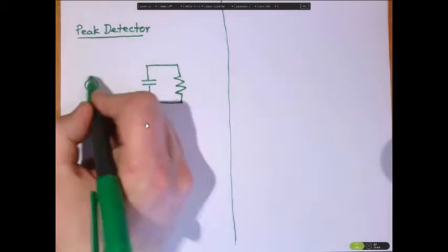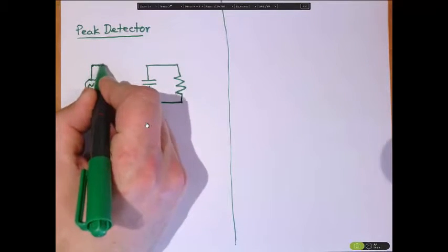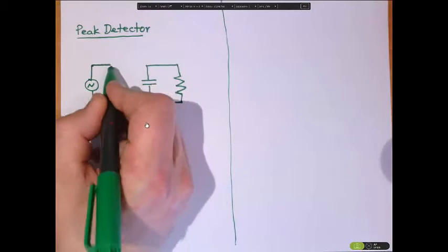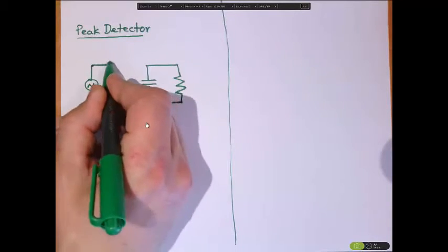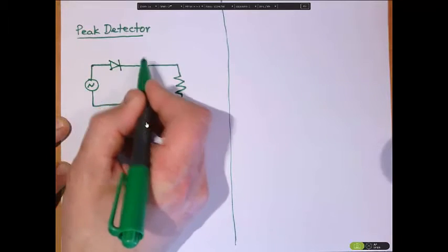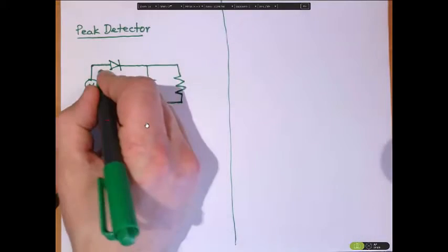Now the problem is that as soon as that signal drops below the peak, current is going to flow off the capacitor into the signal. So to prevent that, we're going to put a diode. That's the basic idea.